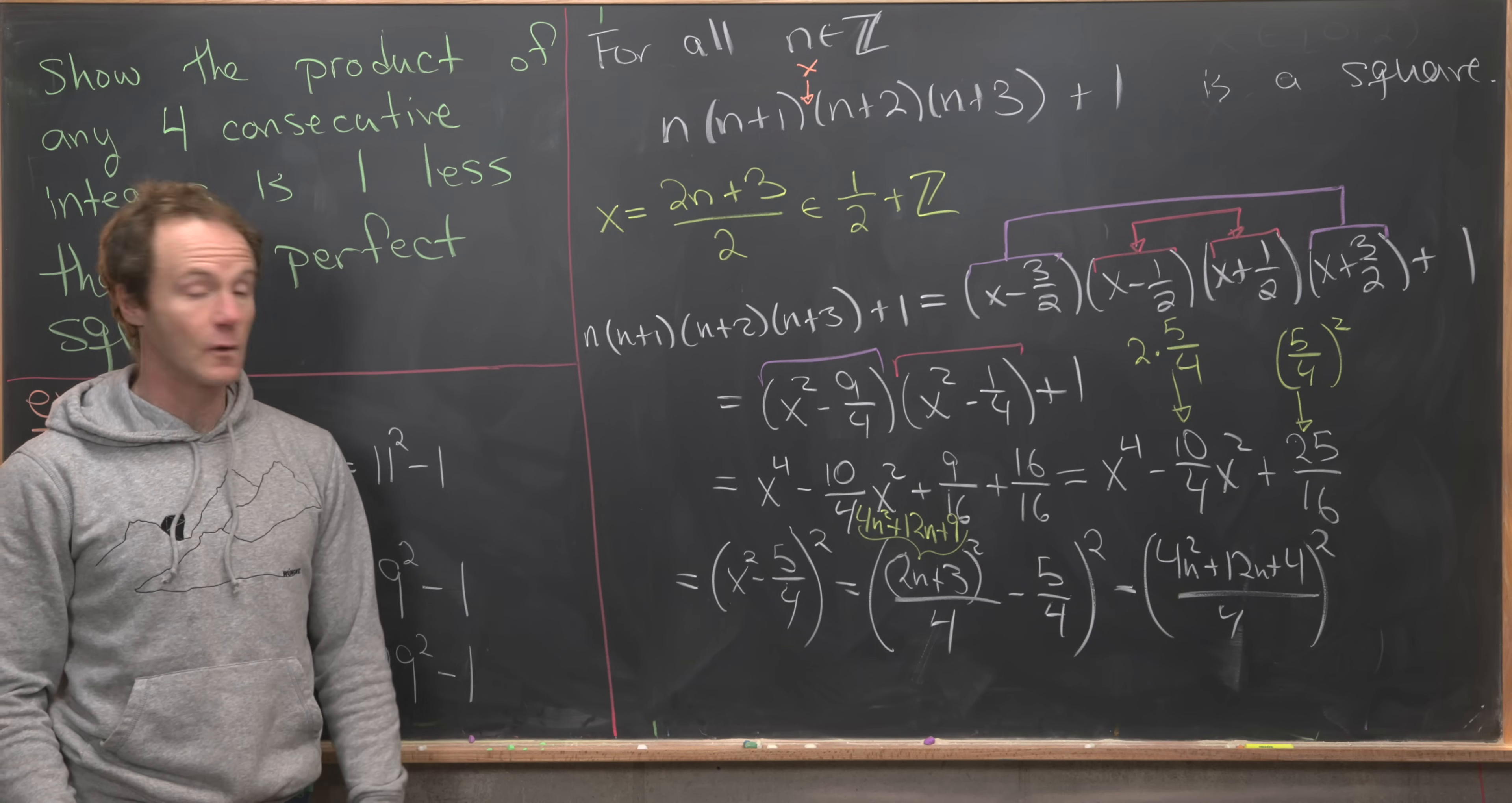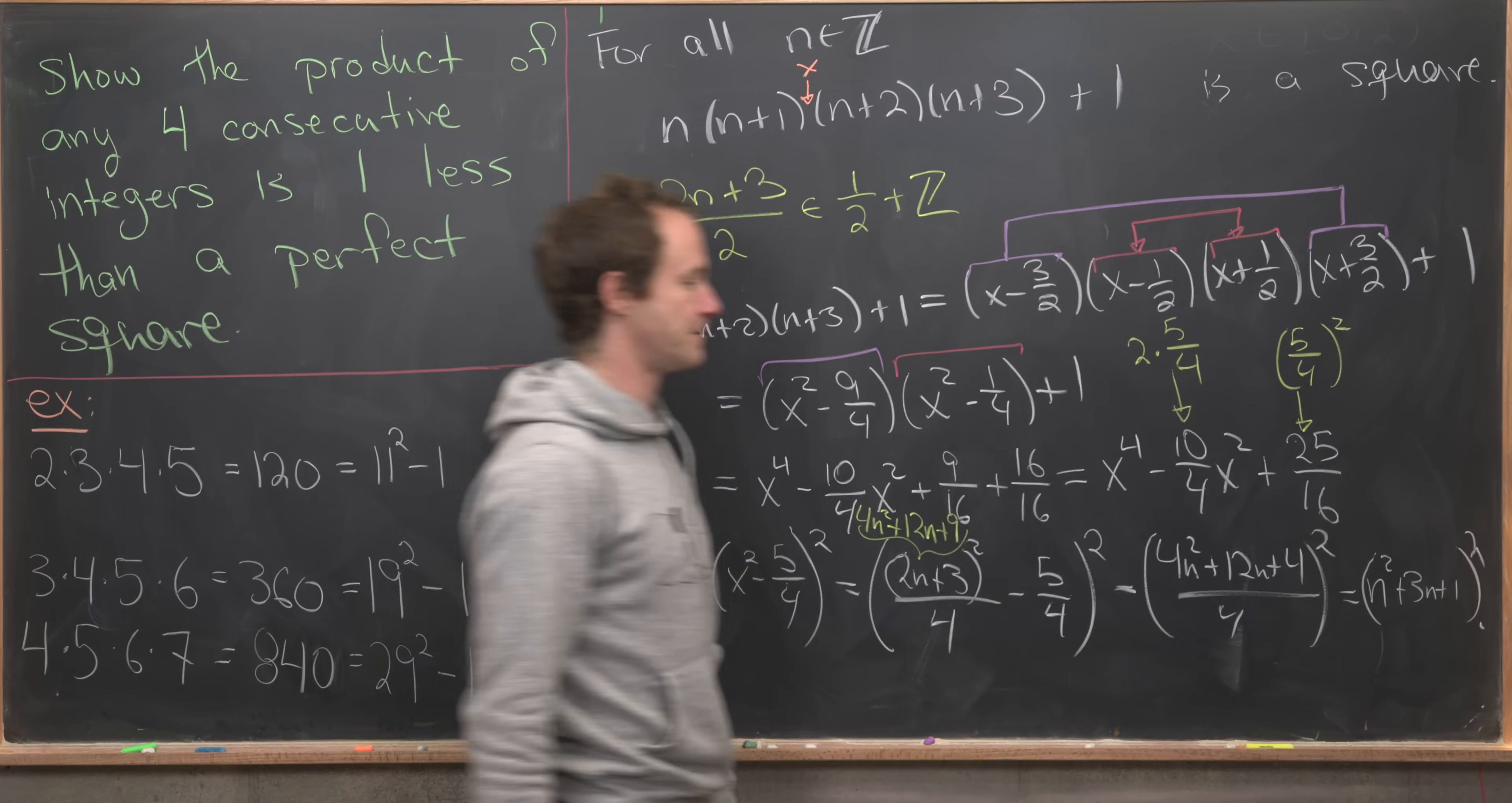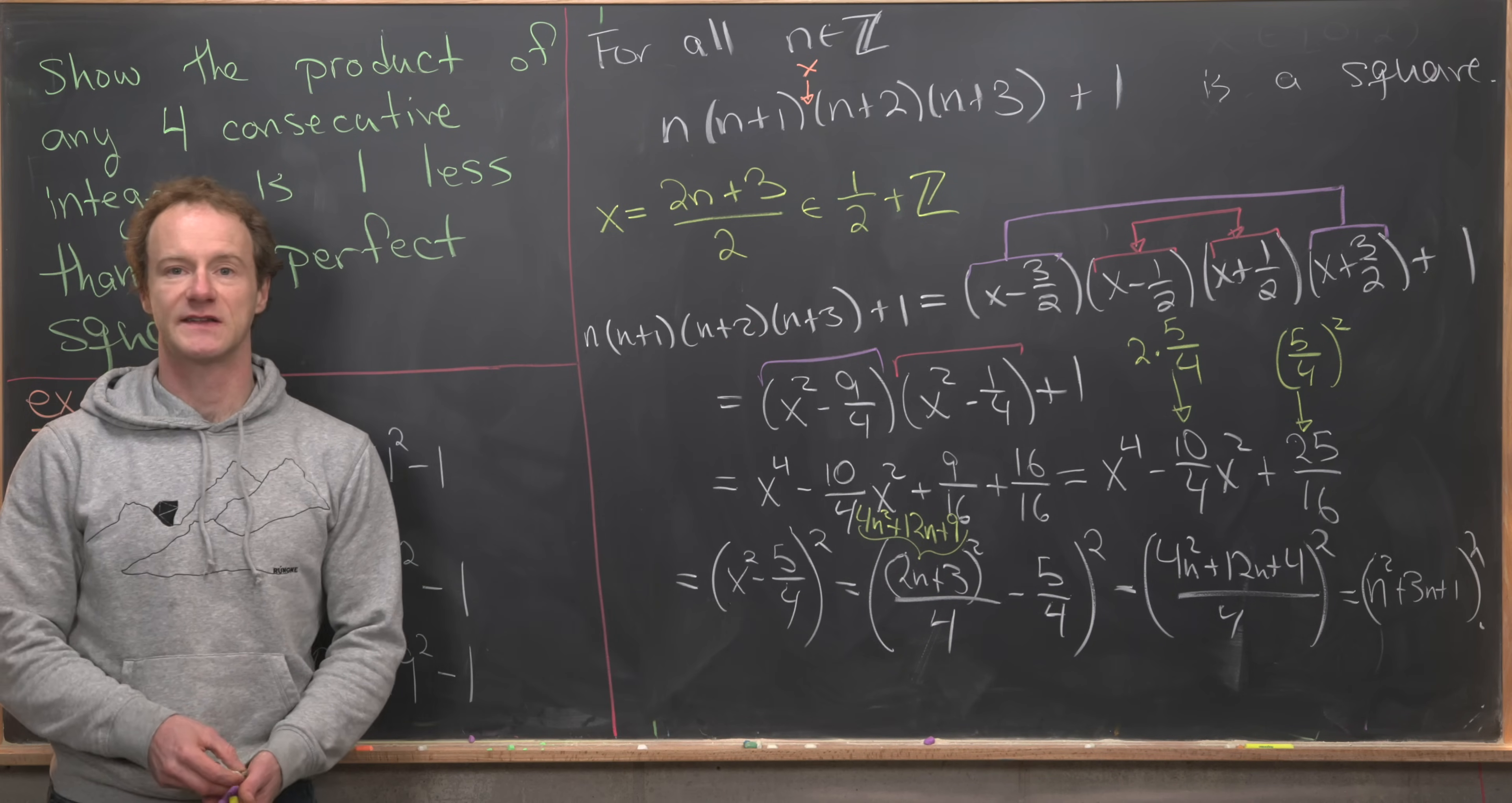Now we could factor a 4 out of the numerator and cancel it with the 4 in the denominator, leaving us with (n² + 3n + 1)². So we've achieved our goal of showing that n(n+1)(n+2)(n+3)+1 is a perfect square. And that's a good place to stop.